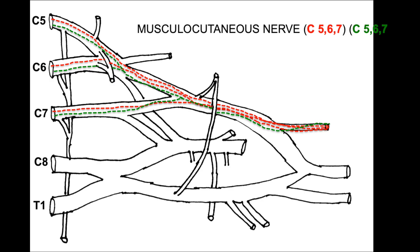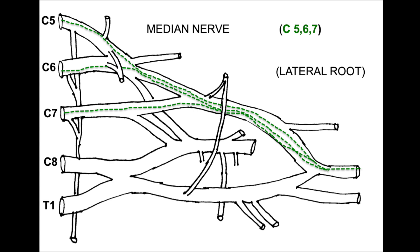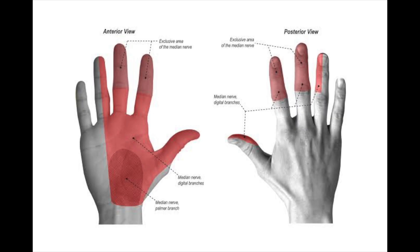The musculocutaneous nerve has both sensory and motor fibers from C5, C6, and C7 roots. Its sensory supply is to the lateral forearm via the lateral cutaneous nerve of the forearm. Motor supply is to the anterior compartment of the arm: the biceps, brachialis, and coracobrachialis. The other terminal branch of the lateral cord is the lateral root of the median nerve, which contains mainly sensory fibers from C5, C6, and C7. Note the mnemonic LML. A lesion of C5–7 roots will cause loss of sensation in the median nerve distribution of the hand.